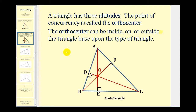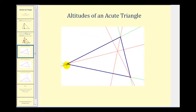Based upon the type of triangle, the orthocenter can be inside, on, or outside the triangle. Let's take a look at each case. Each of the altitudes intersect inside the triangle. This is true when we have an acute triangle, where all the angles are less than 90 degrees.